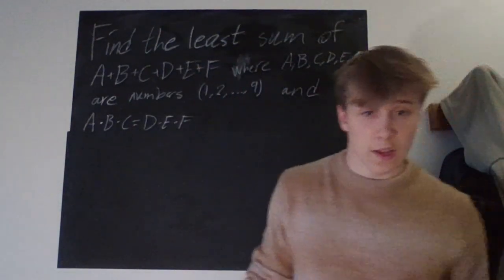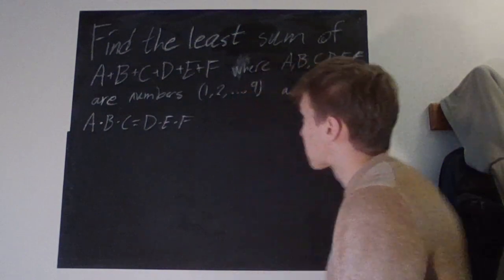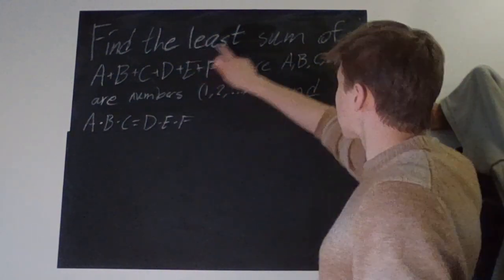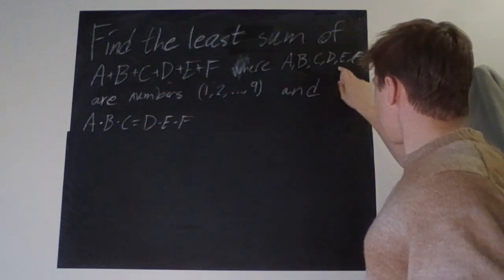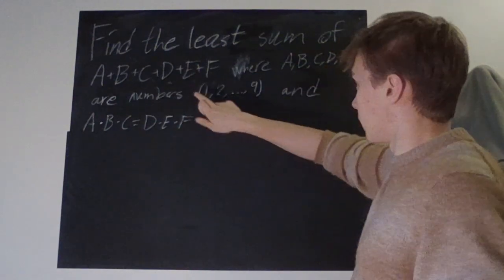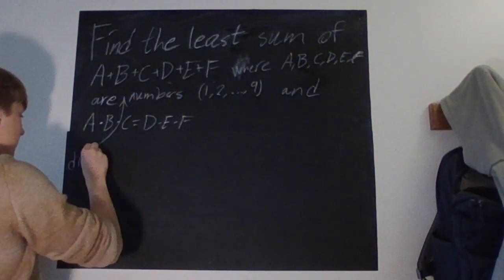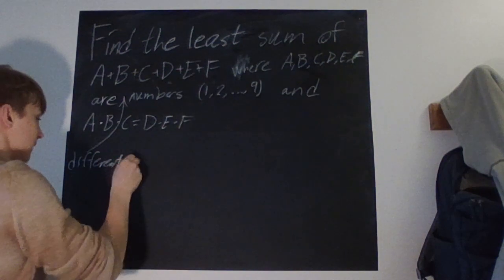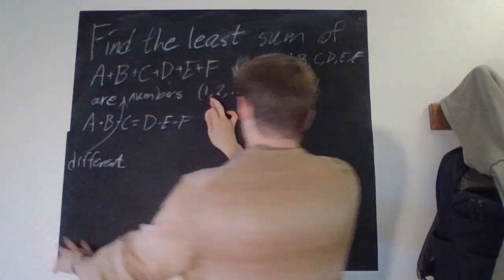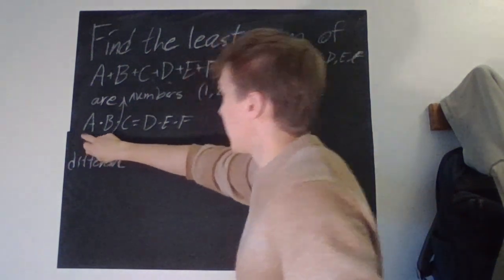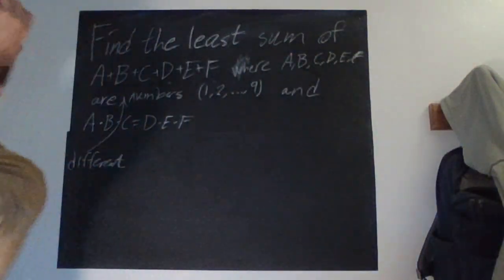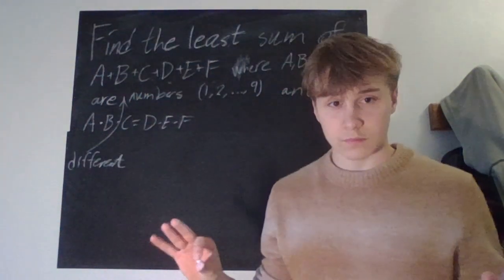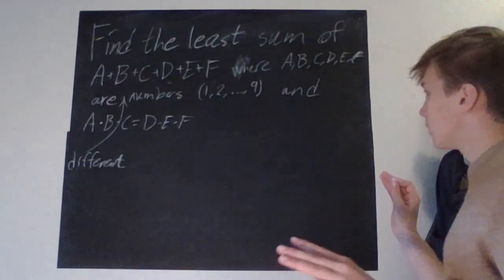Today we have another discrete mathematics problem: find the least sum of a plus b plus c plus d plus e plus f, where a, b, c, d, e, and f are different numbers from one to nine, and where a times b times c is equal to d times e times f.